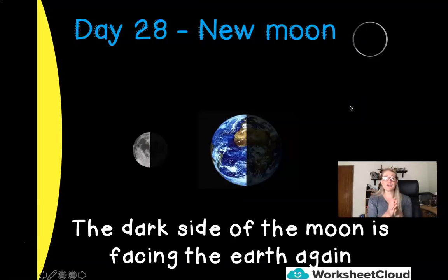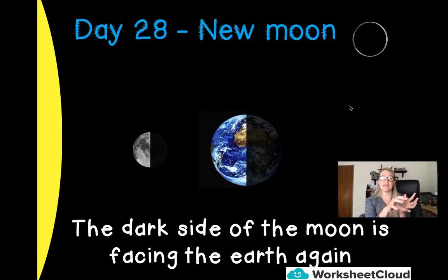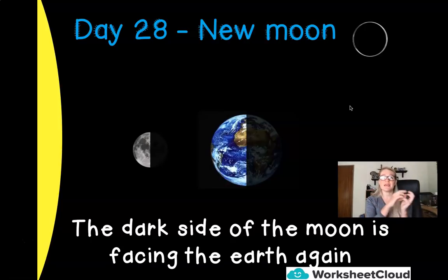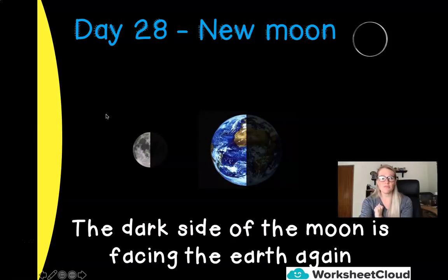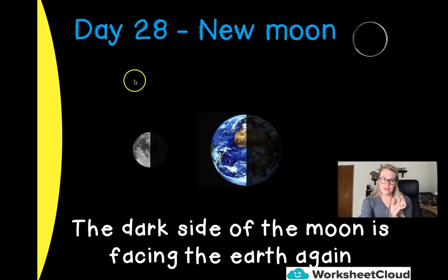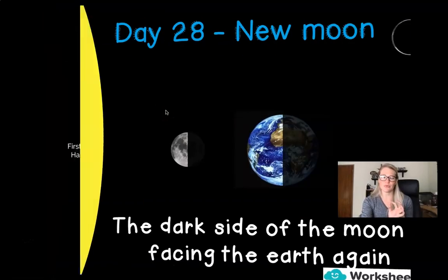Then, boys and girls, we get back to day 28 — from our starting point all the way around. This is our ending period and we have our new moon, which is how we end the cycle and it will be the beginning of the new cycle of the moon. With the new moon, we see the dark side of the moon, so we don't usually see a moon in the sky. If you look up and think, where on earth is that moon? It is most probably the new moon.